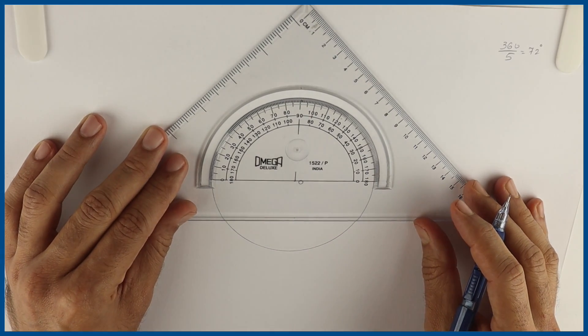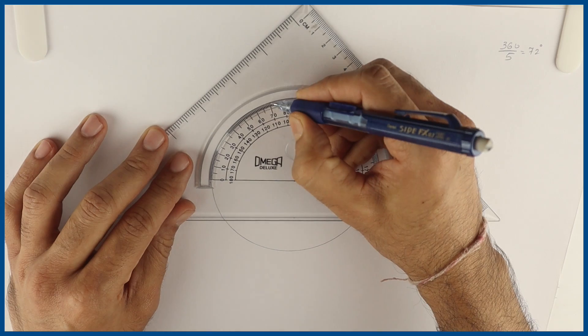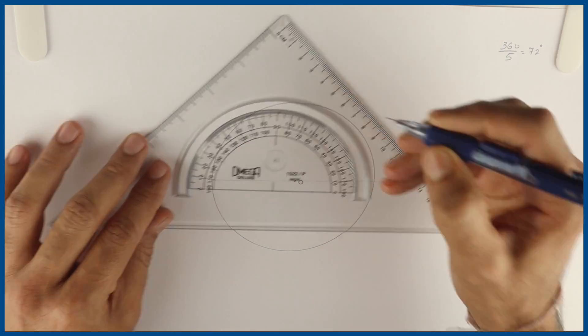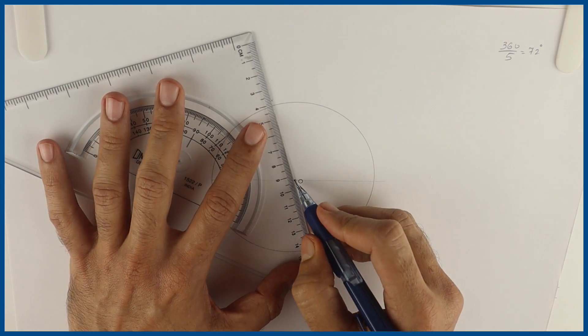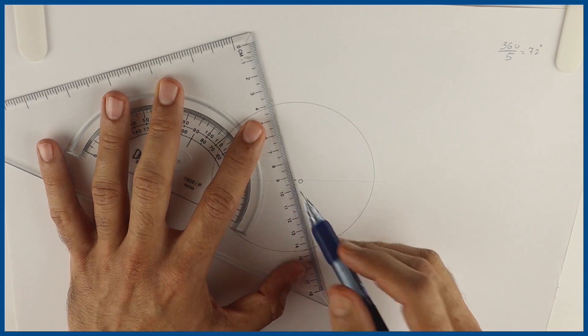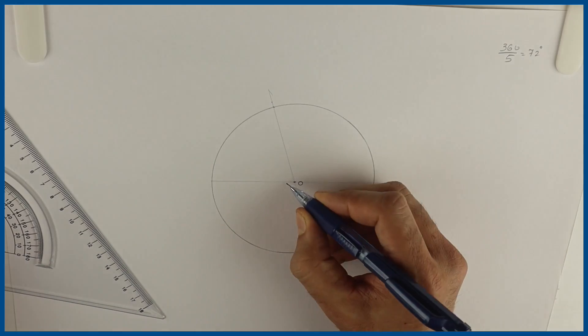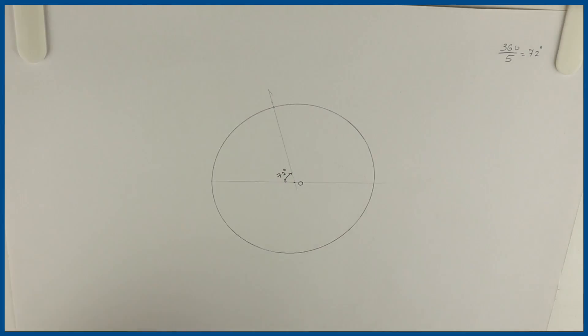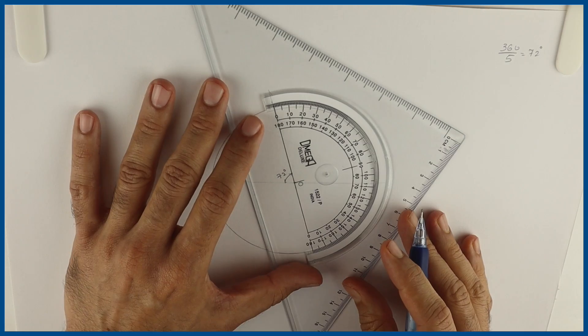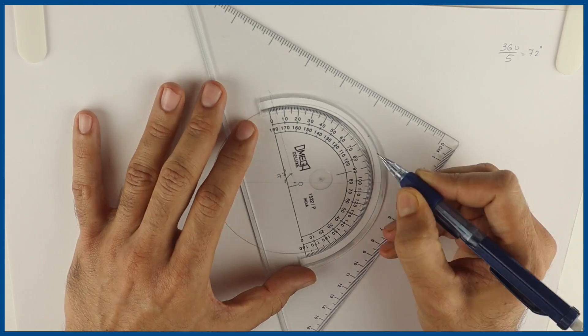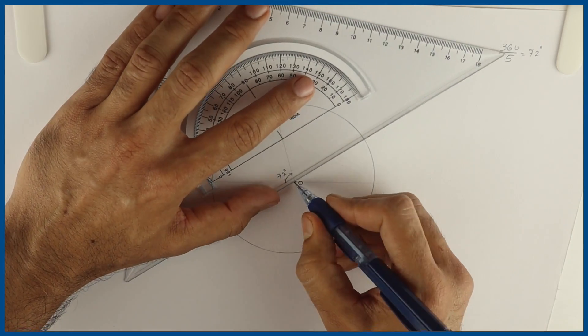So with center O, from there you take 72 degrees. That means we need to divide the circle into 5 equal parts. So we can take 72, 72, 72. See this. Like this we took the circle. Again we will take 72 degrees. So this way we can divide circle into 5 equal parts.